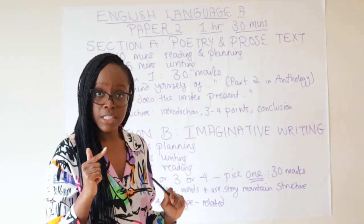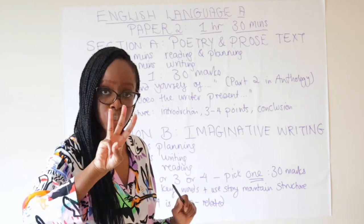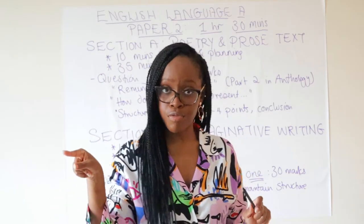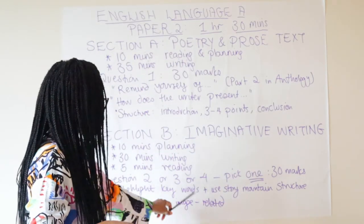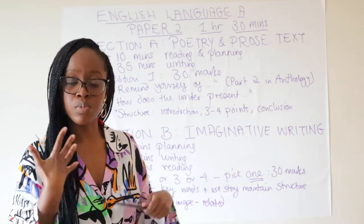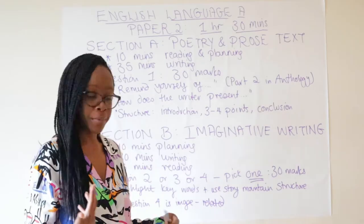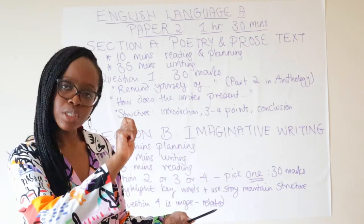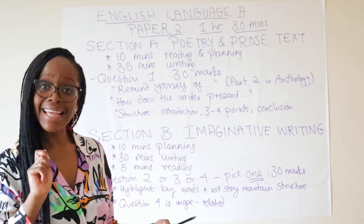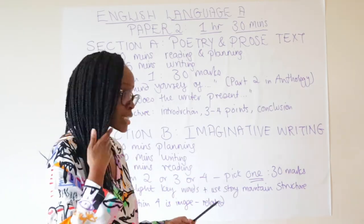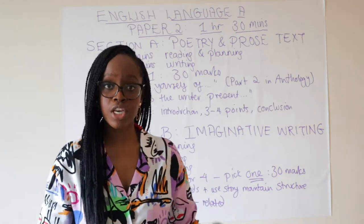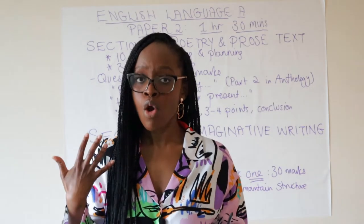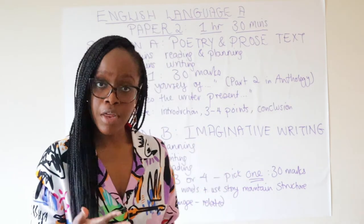For Section B you have a choice of three questions — Question 2, 3, or 4 — and you pick just one, worth 30 marks. Whichever you choose, make sure you highlight all the keywords in that question. After deciding on your question and story, plan using a story mountain structure. If you're unsure about planning for creative writing, check my videos where I go over creative writing and show examples of well-written pieces.